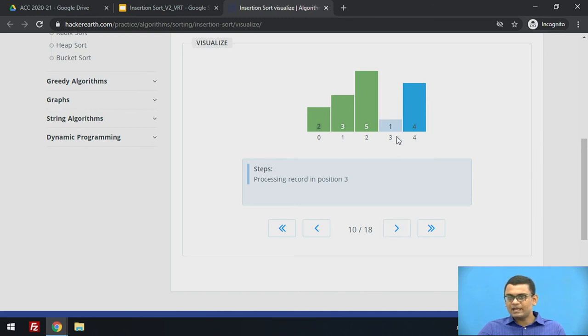Now we want to put element with value 1 in its right position. So we shift the elements 5, 3 and 2 to the right just to make place for element with value 1. And now we see that elements 1, 2, 3 and 5 are in its sorted position.